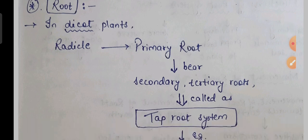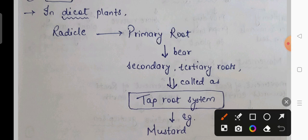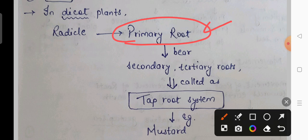If we talk about dicot plants, the root will arise from the radicle. The main root is called the primary root, and from it secondary and tertiary roots arise. This type of root system is called the tap root system — meaning there is one main root and on the sides, secondary and tertiary roots are present.